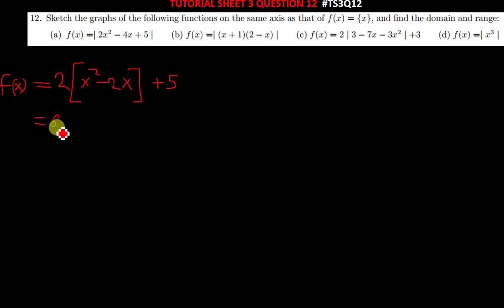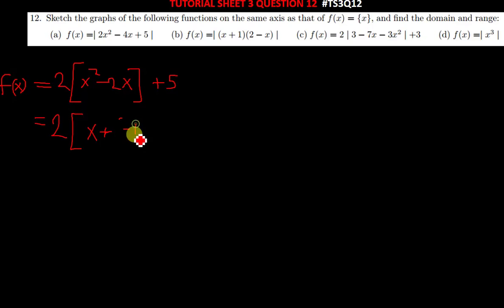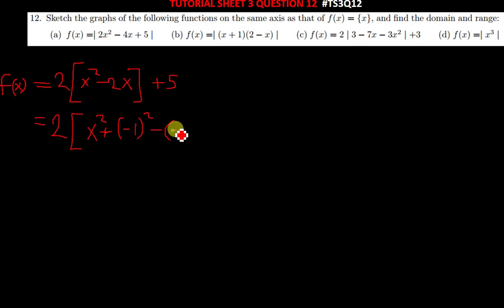To complete the square, we write open square brackets, then write x with the same sign, which is minus, then find half of 2. Half of negative 2 will be negative 1. So we write x minus 1. Let me just follow the steps properly — we'll have negative 1 there.